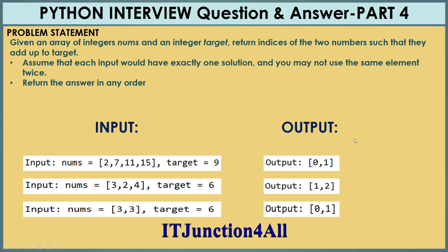Return the answer in any order — it can be 0 comma 1 or 1 comma 0, or for the second example it can be 2 comma 1 or 1 comma 2, anything is fine. That's all for this question; let's see how we can do this in Python.